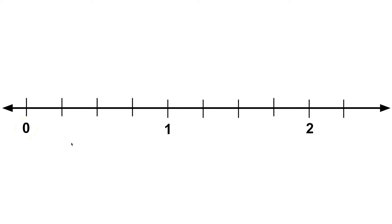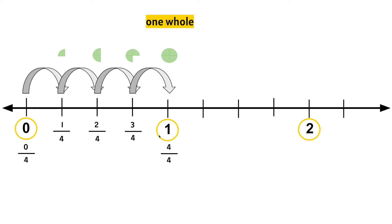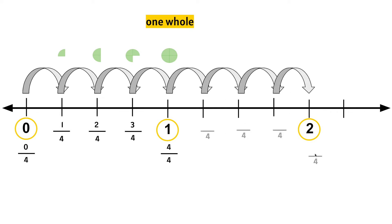This number line has the whole numbers 0, 1, and 2. Let's check how many equal parts there are between 0 and 1: 1, 2, 3, 4. We know the denominator will be 4. At 0, we have 0 fourths. At the first tick mark, we have 1/4. Then 2/4, then 3/4. Adding another fourth gives us 4/4, which is 1 whole. Now we go from the whole number 1 to the next whole number, 2. Let's check: 1, 2, 3, 4 equal parts. The denominator will be 4.